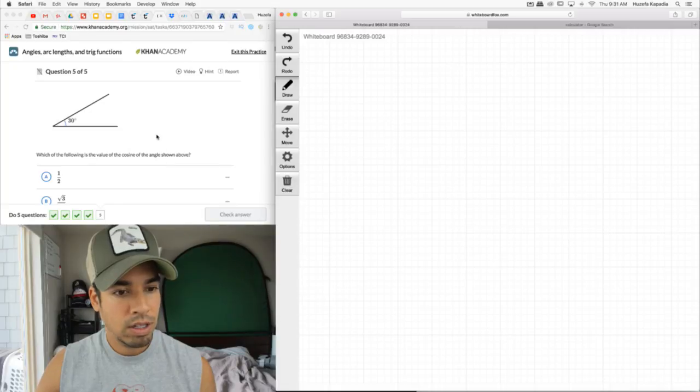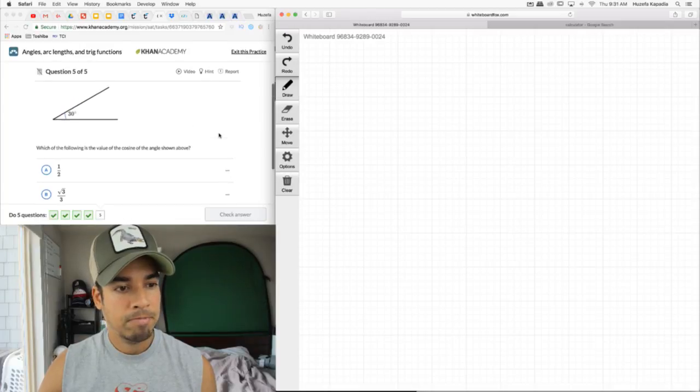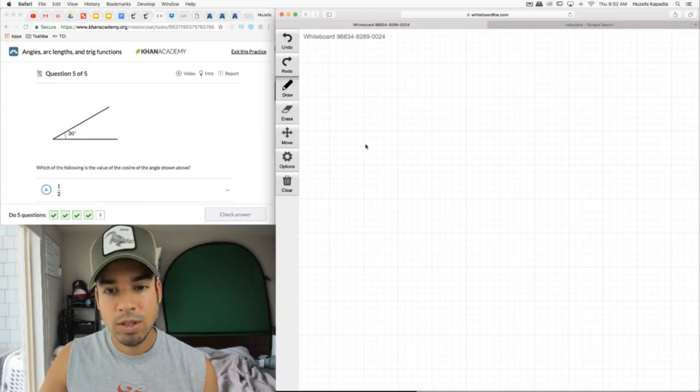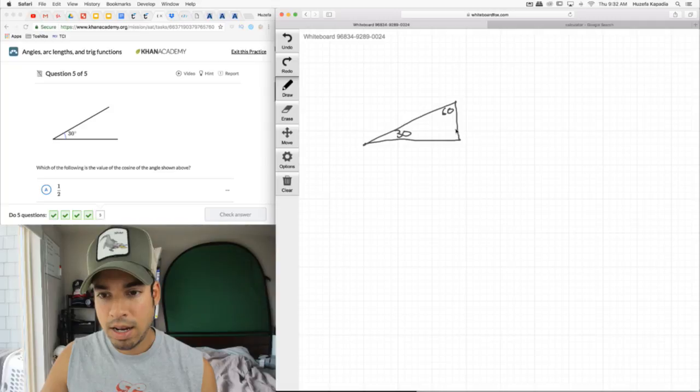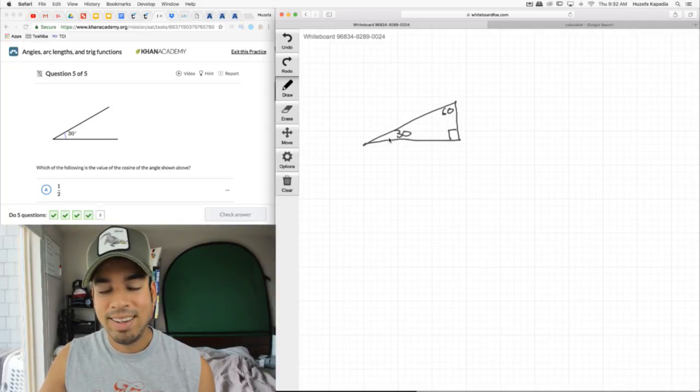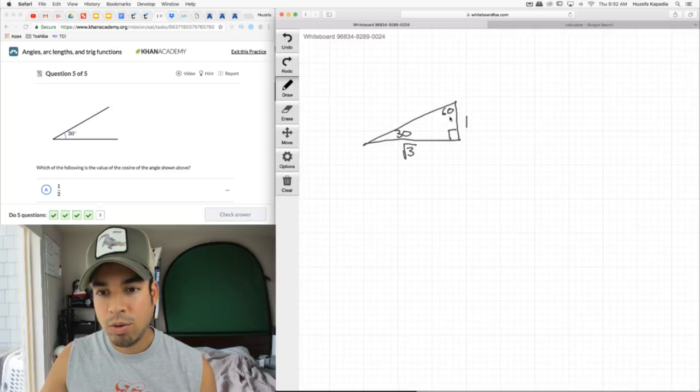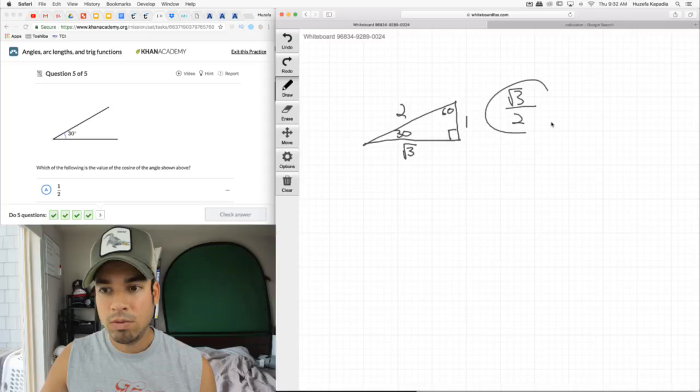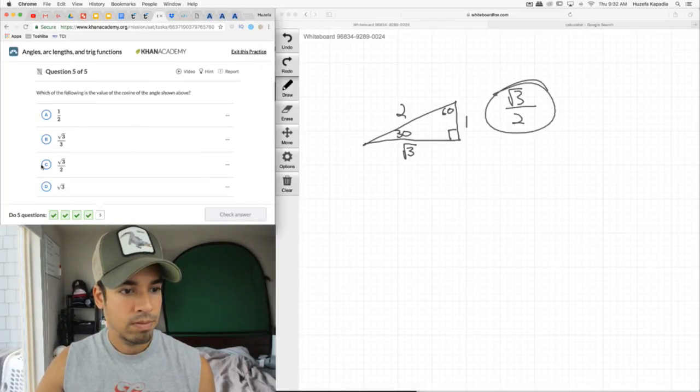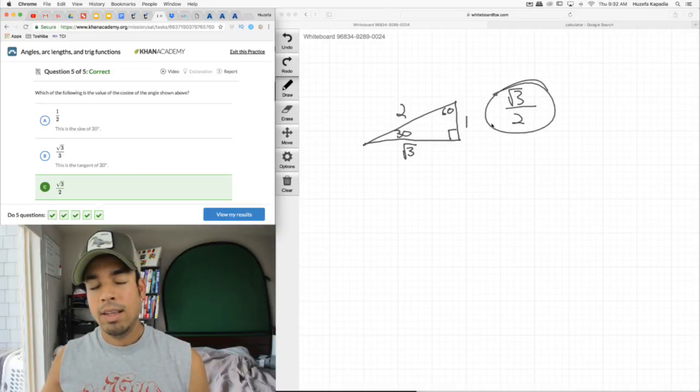All right, next, which of the following is the value of the cosine of the angle shown above? Same thing. You have it memorized, or you could just realize this makes a 30, 60, 90 if we turn it into a triangle. Cosine is adjacent over hypotenuse. Let's fill in the values. 1, square root 3. Square root 3 is always opposite the 60, and then 2 here. So it would be adjacent over hypotenuse, which is square root 3 over 2. And that's it.